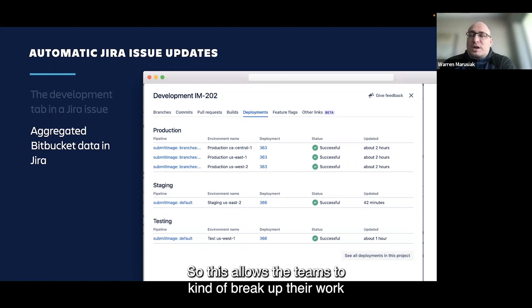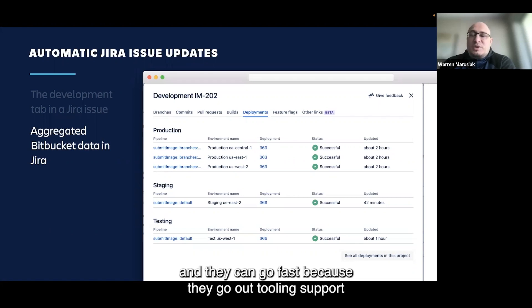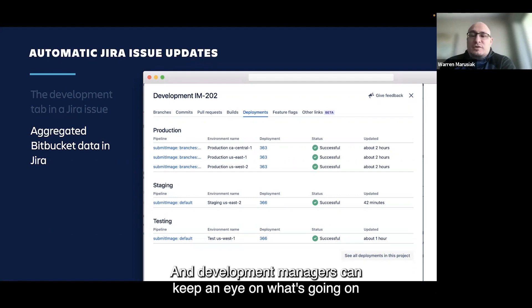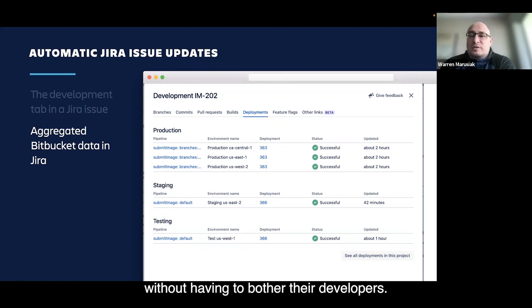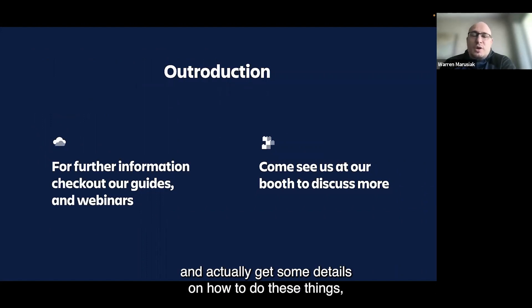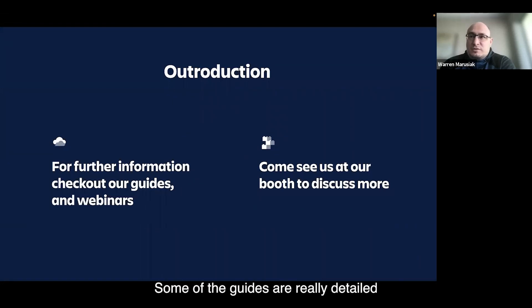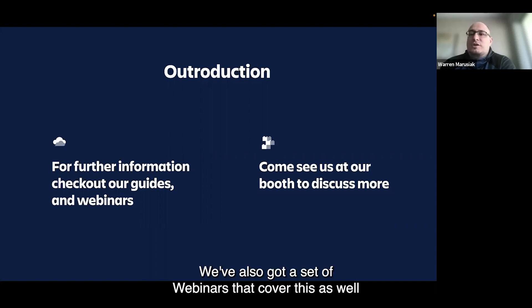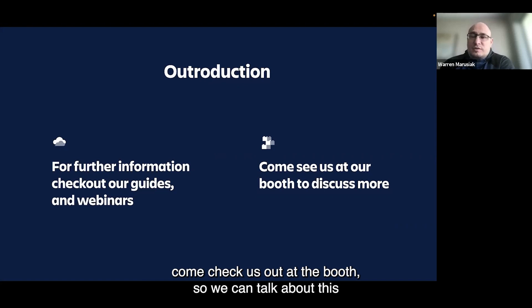This means developers don't have to manually update their Jira issues as they work. They simply grab their Jira issues, make code changes, push to source control, and the CI/CD kicks off automatically. Pull requests to production are captured into Jira automatically, so management can go into the Jira issues to see what's going on without bothering developers. This allows teams to work asynchronously — developers stay heads down and build fast, while development managers keep an eye on progress. For more details, we have guides on support.atlassian.com, a set of webinars, and if you're at Team 22, come check us out at the booth.